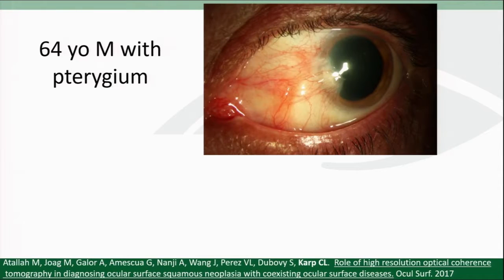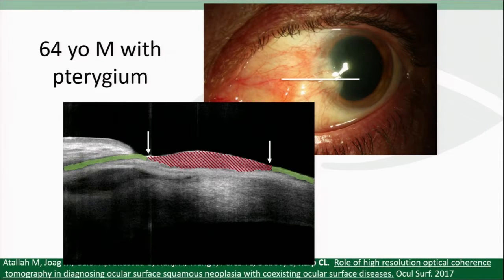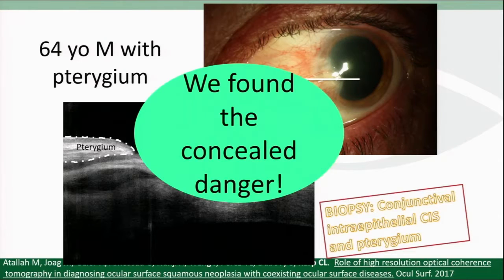Here's another case of a gentleman who came in with a little opalescence on the head of his pterygium, which we frequently see. When I scan him, what we see is normal epithelium that's dark and thin, then thickened hyperreflective epithelium with an abrupt transition on both sides. You also see the pterygium with normal epithelium and stringy hyperreflective tissue. This case confirmed ocular surface squamous neoplasia adjacent to the pterygium.